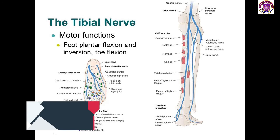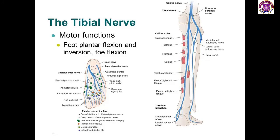The tibial nerve is the largest terminal branch of the sciatic nerve. It arises in the lower third of the thigh and runs downward through the popliteal fossa, lying first on the lateral side of the popliteal artery. It has cutaneous and muscular branches. The sural nerve descends between the two heads of the gastrocnemius muscle and is usually joined by the sural communicating branch of the common fibular nerve. The muscular branches supply both heads of the gastrocnemius, the plantaris, soleus, and popliteus. It also has articular branches that supply the knee joint.